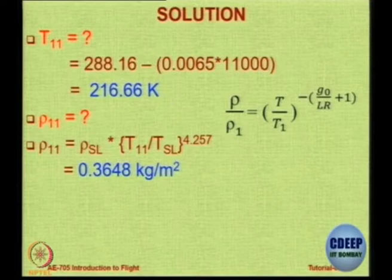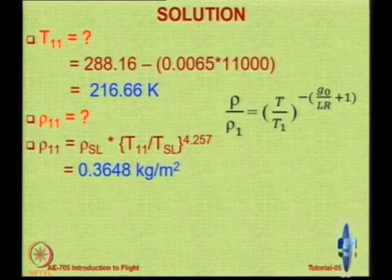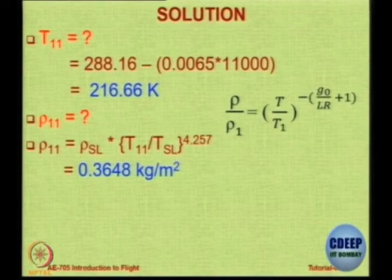Now I want to ask one more question. Suppose the conditions are not ISA but ISA plus 20 — a hint for the quiz. If the temperature is ISA plus 20, how do you calculate density? By adding 20 degrees to the sea-level temperature. But if you take sea-level temperature as 288.16 plus 20 and repeat, is it correct? No — there is one more thing to be done. Remember, the sea-level density of 1.2256 is under ISA conditions, so even that must change to ISA plus 20.